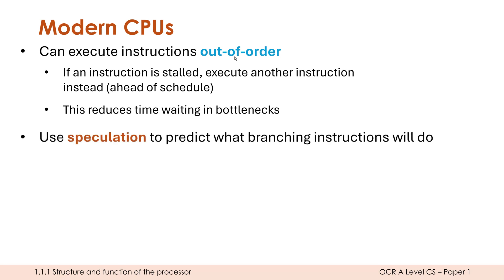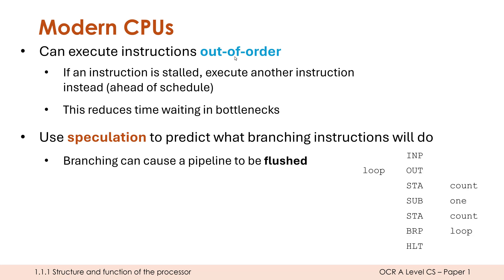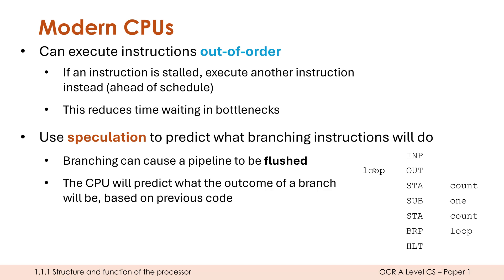Another thing CPUs do really quite well is speculation, which is where it predicts what branching instructions are going to do. In the pipeline video we talked about how pipelining can be broken by branching. If we've got a long pipeline, a CPU might have 30 instructions currently in the pipeline. If we reach a branching instruction, this might result in having to jump back and execute something else, which completely breaks that pipeline — it will cause it to get flushed, meaning discarded. So the CPU will try to predict the outcome of a branching instruction based on previous code and previous experiences.